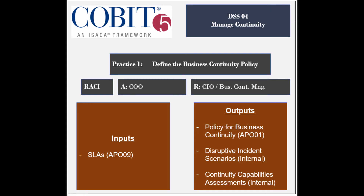The entity that is held accountable is the chief operating officer. The practice receives one input, which is the service level agreements from the AP09 process. It generates three outputs, which are the policy and objectives for business continuity to be used by the AP01 process, the disruptive incident scenarios, and the assessments of continuity capabilities, both to be used internally.